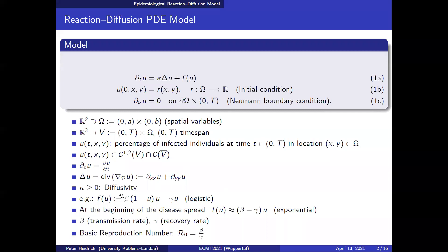The parameter kappa stands for the diffusivity. If kappa is zero then we have something like an ODE system. One first approach for the epidemiological behavior would be a logistic function based on the SIS model. This is a first simple step to start with. If we are at the beginning of a disease so this value is very small, it nearly looks like exponential growth. Beta stands for the transmission rate, which is unknown and should be fitted along with the diffusivity kappa and the recovery rate.